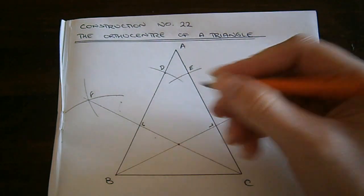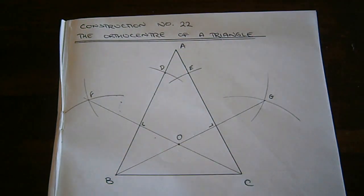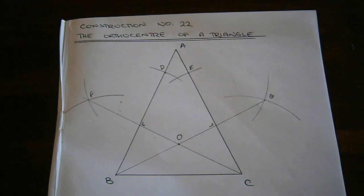And the point at which these two altitudes meet, let's call it O, is the orthocentre of this triangle.